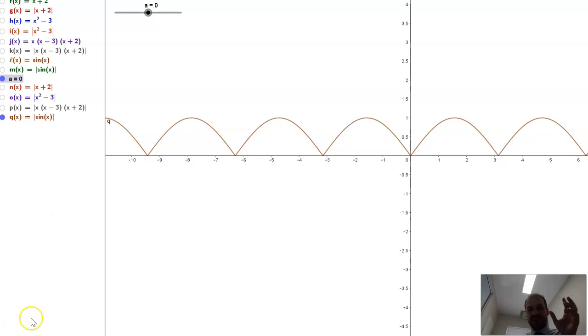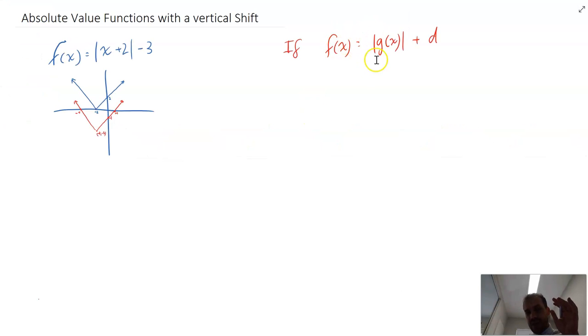Alright, so the process for sketching these, it's fairly straightforward. It's a three-step process. If f of x equals the absolute value of g of x plus d, your first step is just to sketch g of x. That's step one.